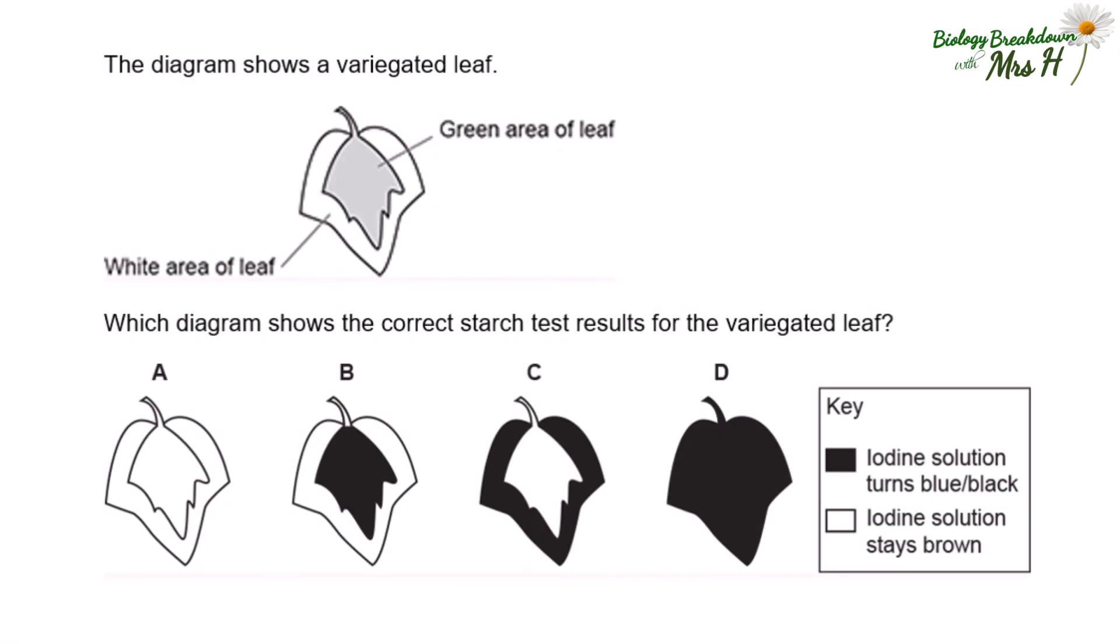Have a quick look at this exam question. The diagram shows a variegated leaf, white area and the green area. Which diagram shows the correct starch results for the variegated leaf? Look at the key. We know it definitely can't be A or D. So is it B or C? Well, green is chlorophyll. Chlorophyll means photosynthesis has taken place. If photosynthesis has taken place, then glucose is made and that's converted to starch. So it must be B.